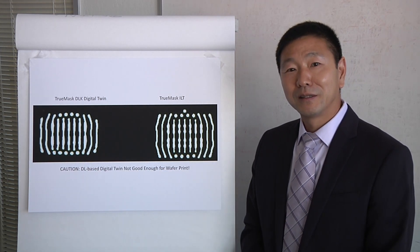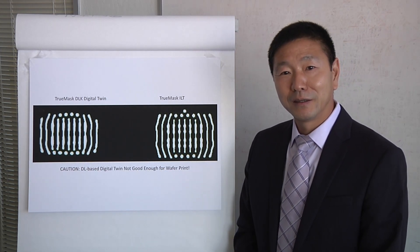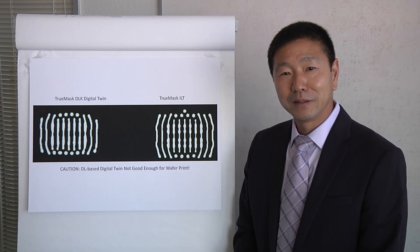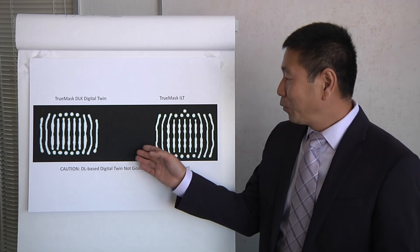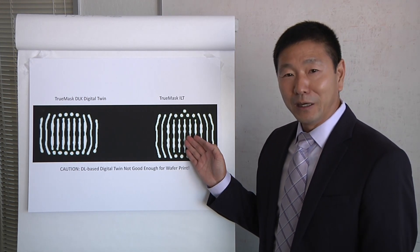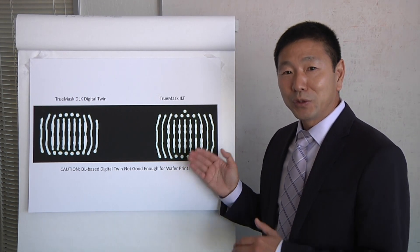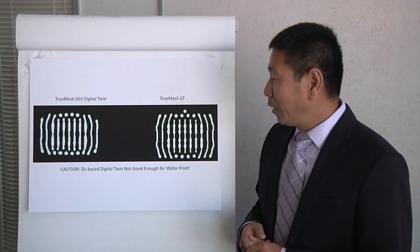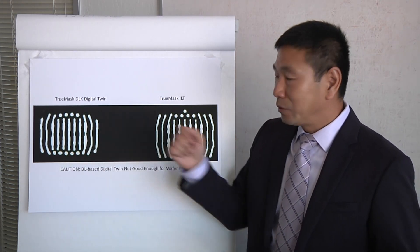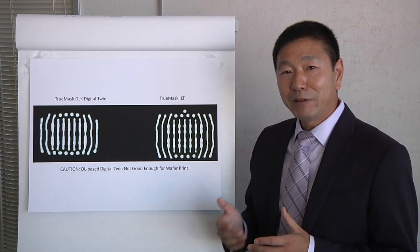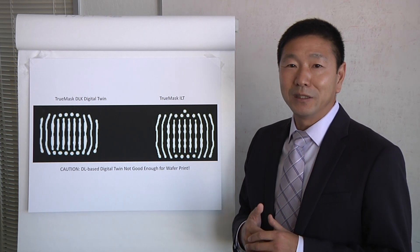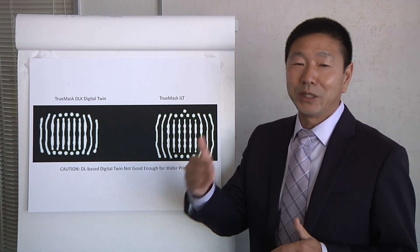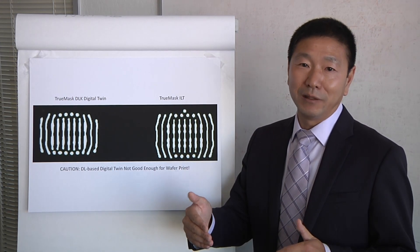Is this going to be useful going down to say three nanometers, one and a half nanometers, as well as some of the advanced packaging that's out there? Curvilinear patterns right now are mainly used for 193i, 193 immersion. For EUV at seven nanometer, they don't really need curvilinear ILT. But down to three nanometer, definitely required. And five nanometer, they can leverage it as well.